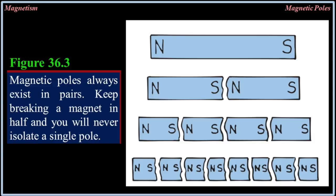Concept check: how do magnetic poles affect each other? Magnetic poles always exist in pairs. Keep breaking a magnet in half and you will never isolate a single pole.